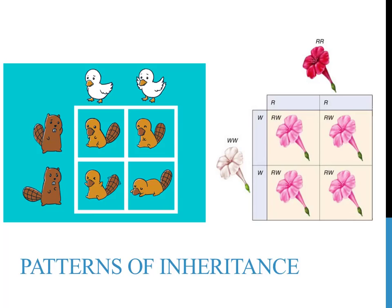Codominance, incomplete dominance, X-linked inheritance, linked traits, polygenic traits, and multiple alleles will all be described in the upcoming slides. Even though practice problems and maybe genetics as a whole seem pretty straightforward and simple up to this point, this slideshow will exhibit how extraordinarily complex the study of genetics can be and how difficult results can be to interpret. While this video will introduce these different patterns of inheritance, there will be several separate videos on how to work genetics practice problems involving each of these topics.